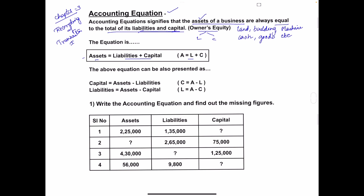As you know, in financial statements we prepare the trading and profit and loss account and the balance sheet. The balance sheet is a statement of assets and liabilities. In the balance sheet, we record the liabilities and assets of the organization. On the left side we record the liabilities and capital of the business, and on the right side we record the assets.